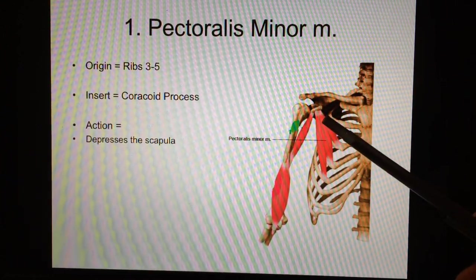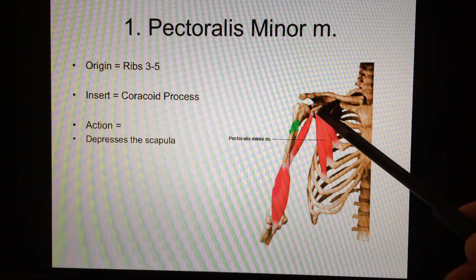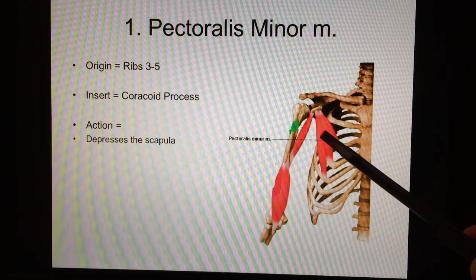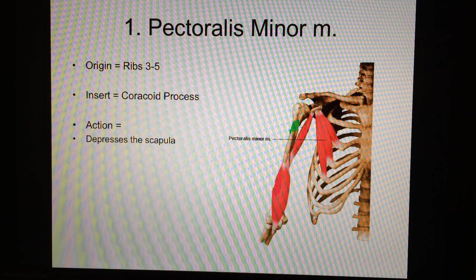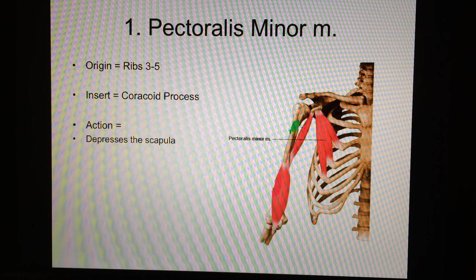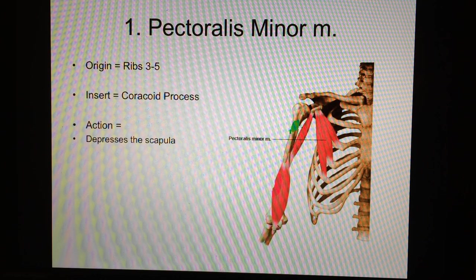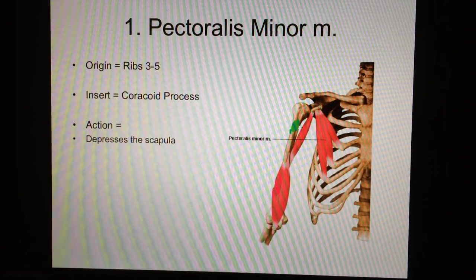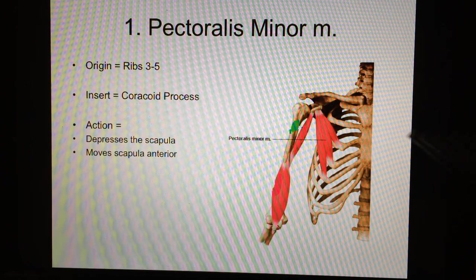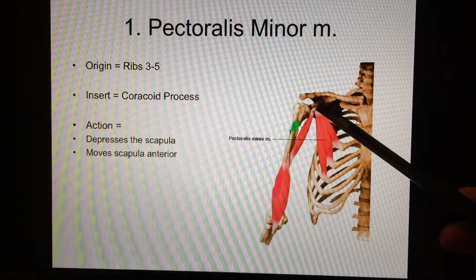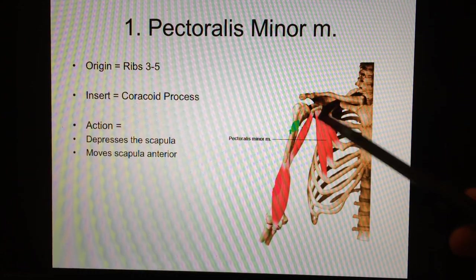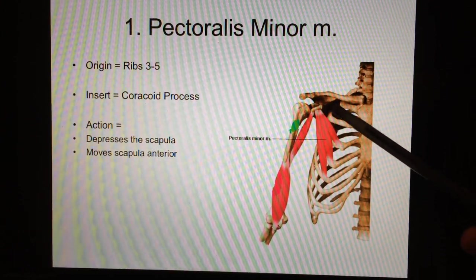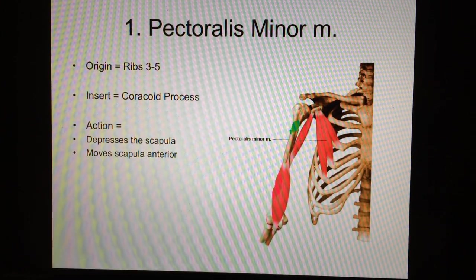It's going to depress the scapula. The origin is below the insertion, so it can pull the scapula down. If you're sitting at home in your chair or at your desk, just kind of pull your shoulders and just point them straight to the ground. You don't have a lot of motion there because your ribcage gets in the way, but you can pull the scapula down. The other one is it's going to move or rotate the scapula to the front.